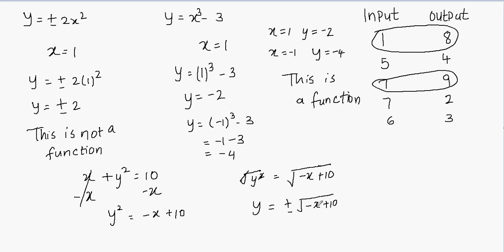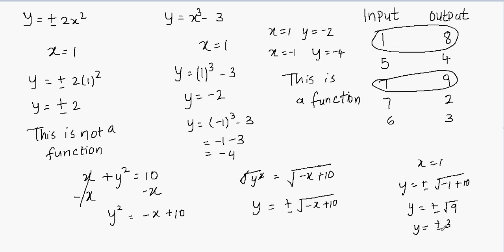Now plug in x equals 1: y equals plus and minus the square root of negative 1 plus 10, which is plus and minus the square root of 9, giving plus and minus 3. So when you plug in x equals 1, you get two different results — positive 3 and negative 3. You're generating two different results for the same x value, so this is not a function.